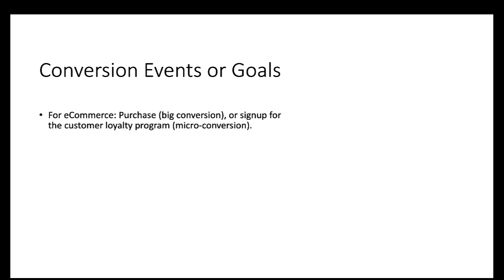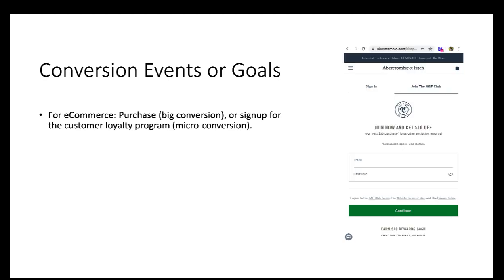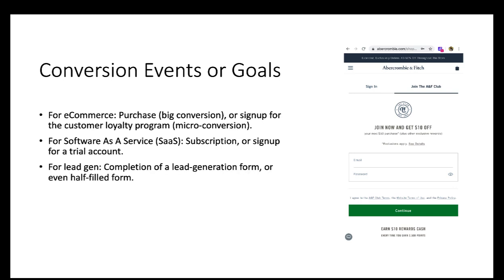Conversion events or goals depend on the type of website or mobile app. For e-commerce like the Google Merchandise Store, the main conversion is a purchase, while micro conversions such as signing up for a customer loyalty program are small steps toward that success. For software-as-a-service (SaaS), a subscription is the big conversion and signing up for a trial account is a micro conversion. For lead generation, completing a lead form — such as a customer filling out a form on Angie's List to find someone to paint their house — is the big conversion.